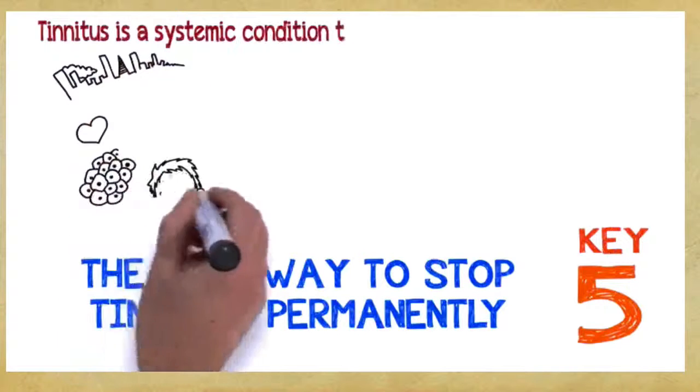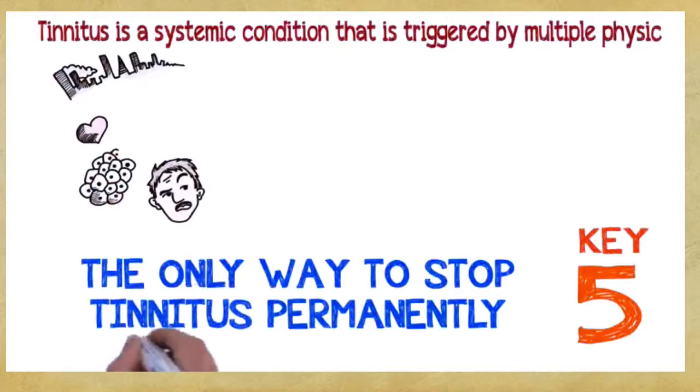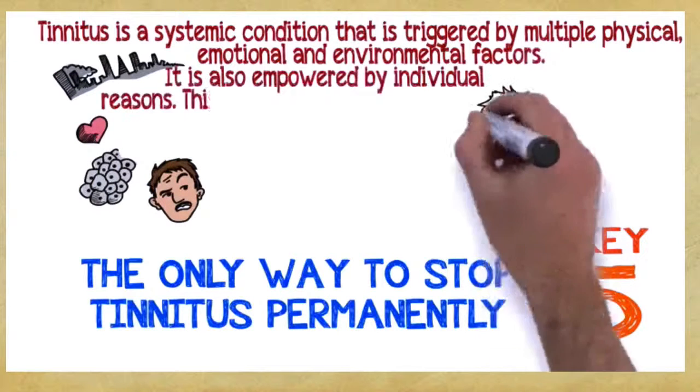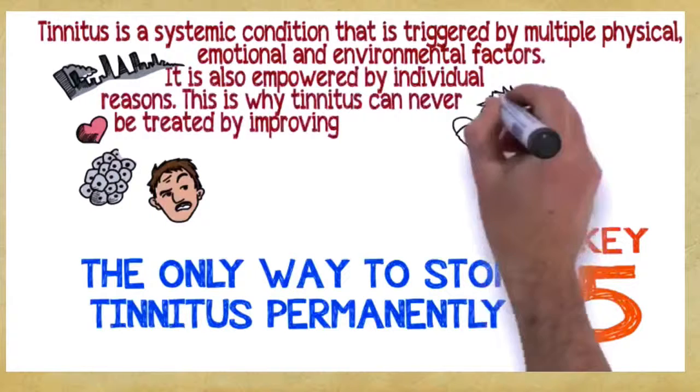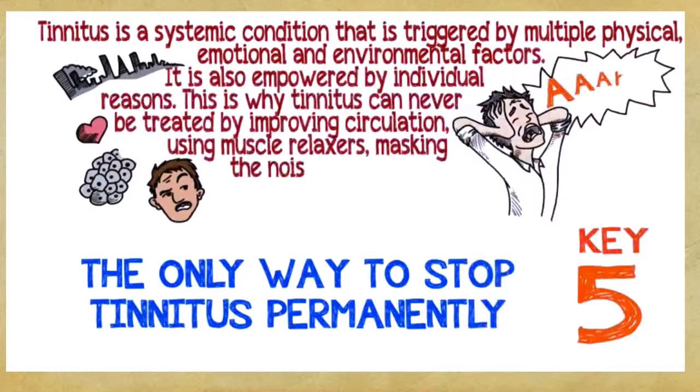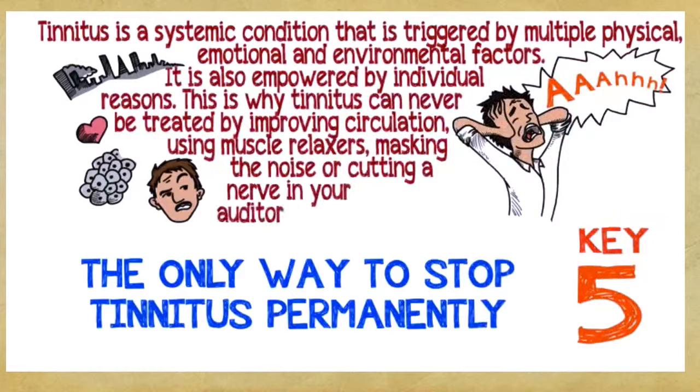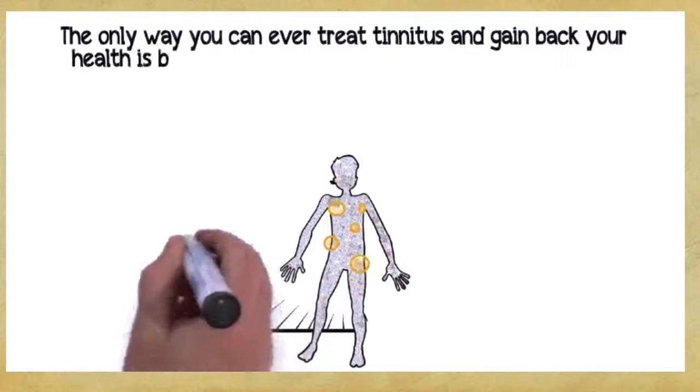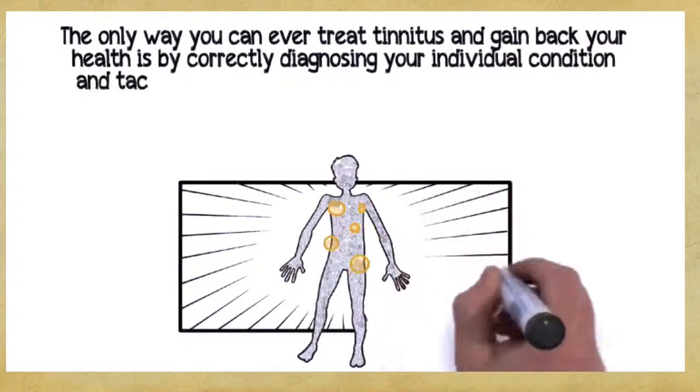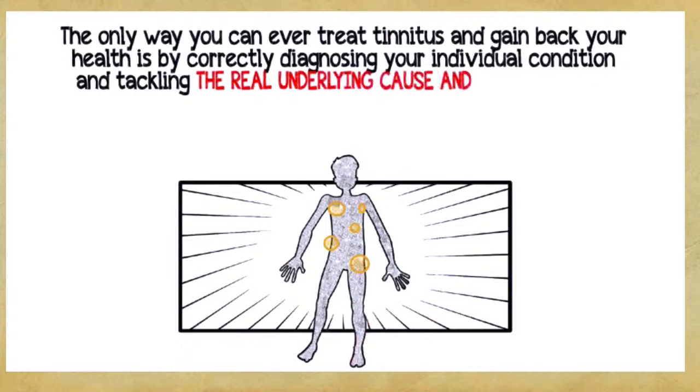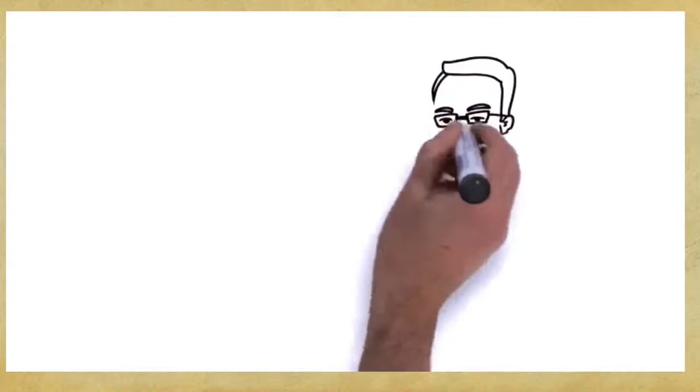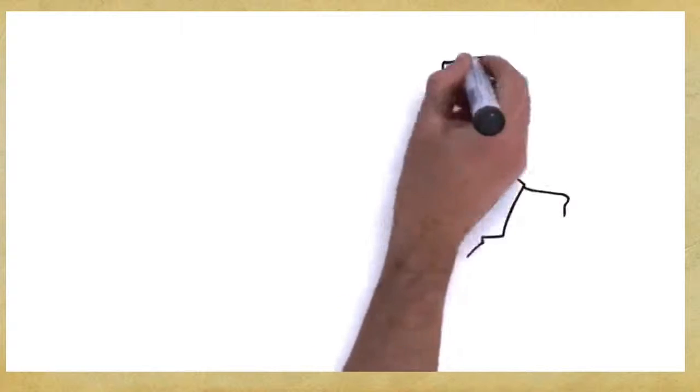Key number five. The only way to stop tinnitus permanently. Tinnitus is a systemic condition that is triggered by multiple physical, emotional, and environmental factors. It's also empowered by individual reasons. This is why tinnitus can never be treated by improving circulation, using muscle relaxers, masking the noise, or cutting a nerve in your auditory system. The only way you can ever treat tinnitus and gain back your health is by correctly diagnosing your individual condition and tackling the real underlying cause and circumstances that promotes your tinnitus, following a complete, multi-dimensional, holistic program. Okay, now that we've covered five essential things you need to know to treat your tinnitus, let me introduce you to my best-selling program.